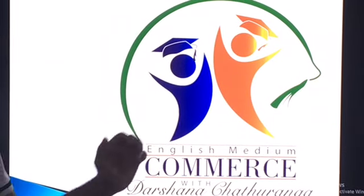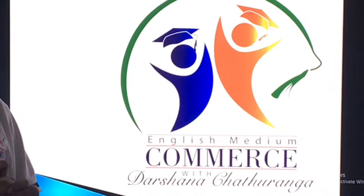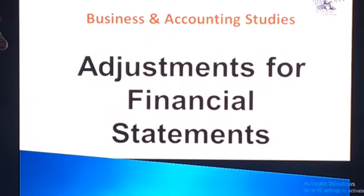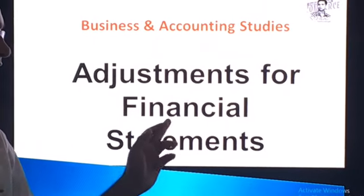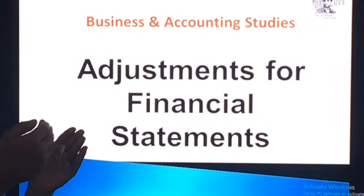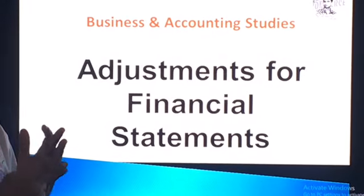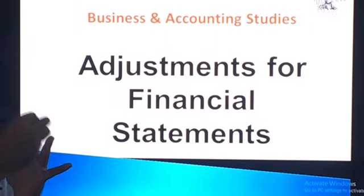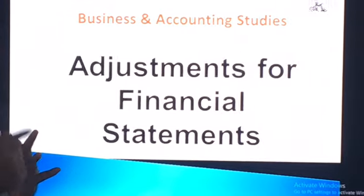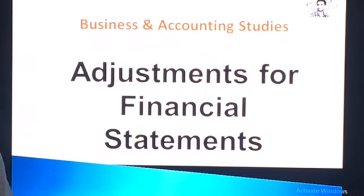Let's start this lesson about adjustments and how they are used for financial statements. Financial statements are the final product of our accounting process. There are two statements we discuss at all levels: one is the profit or loss statement, used to calculate profit or loss for the period, and the other is the statement of financial position.